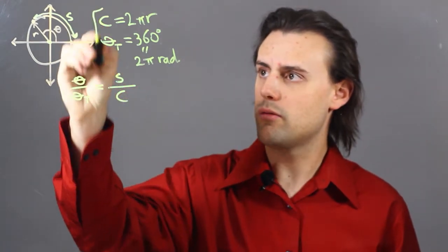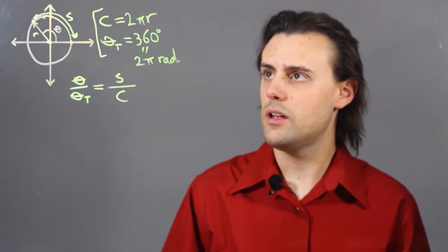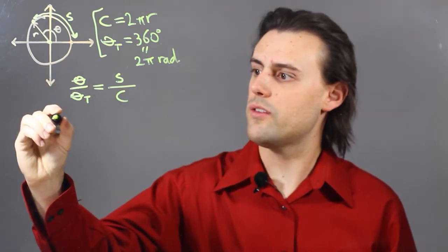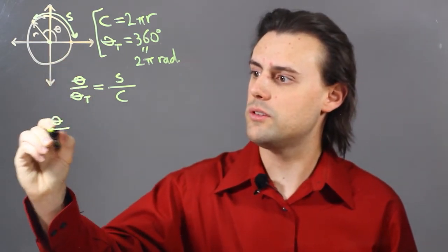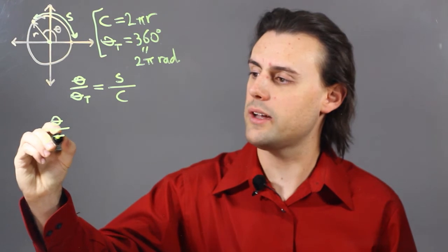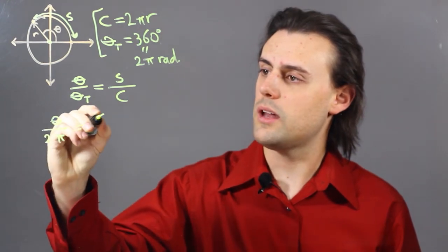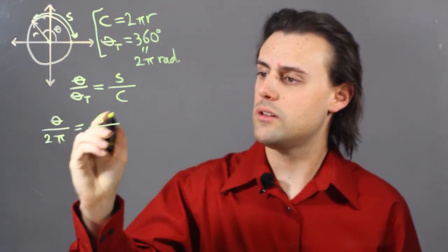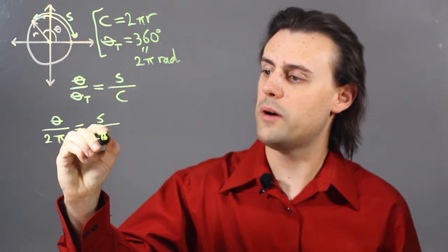So plugging in what I know about the circle, I'm going to have theta, the central angle, divided by 2π, and my arc length, divided by 2πr.